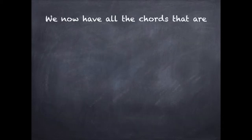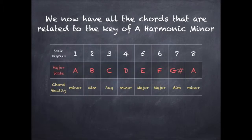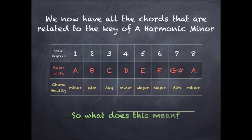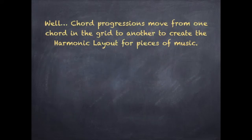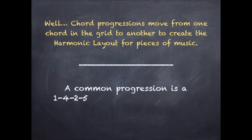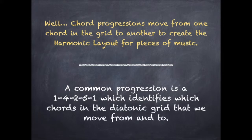We now have all the chords that are related to the key of A harmonic minor. But what does this mean? Well, chord progressions move from one chord in the grid to another to create the harmonic layout for pieces of music. A common progression is 1, 4, 2, 5, 1, which identifies which chords in the diatonic grid we will move from and to.